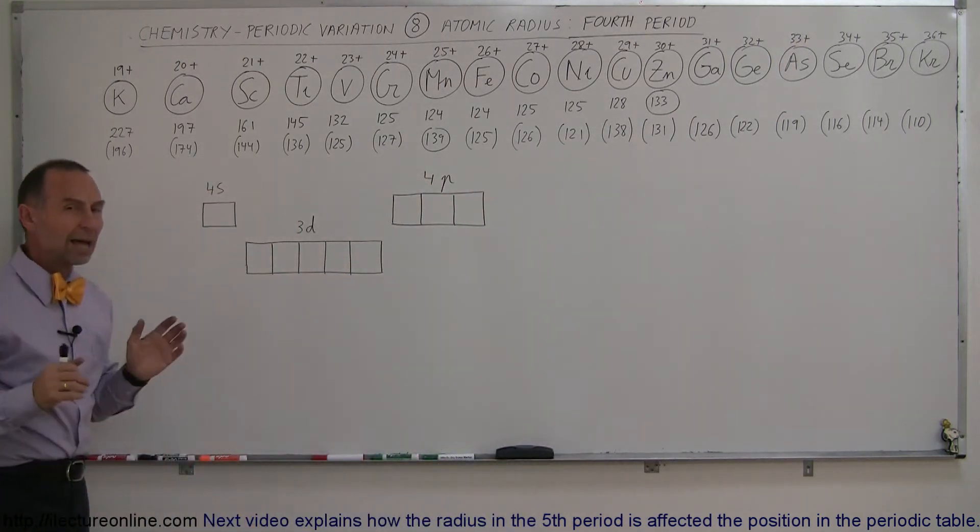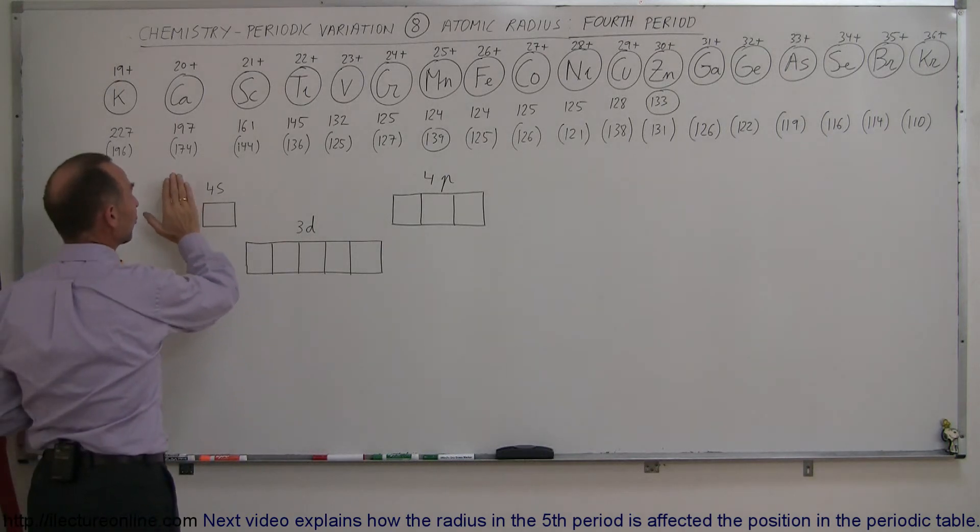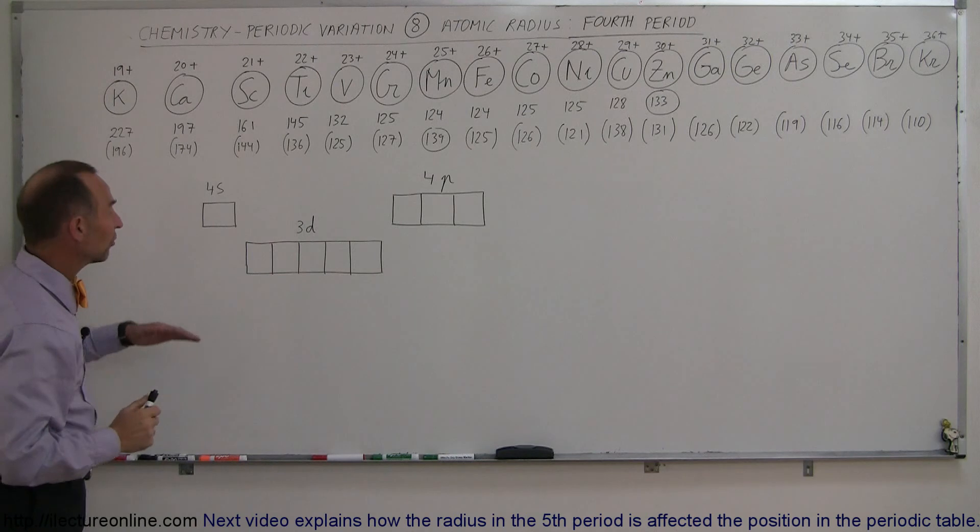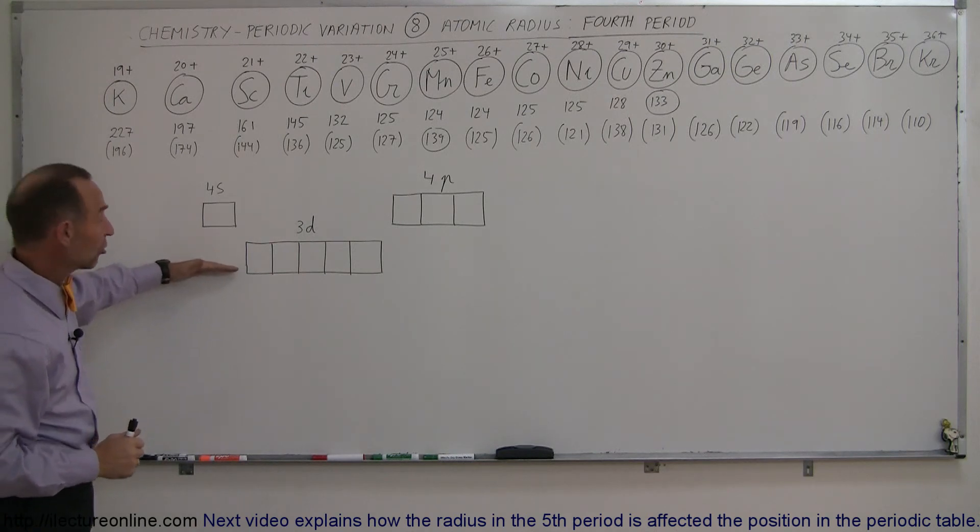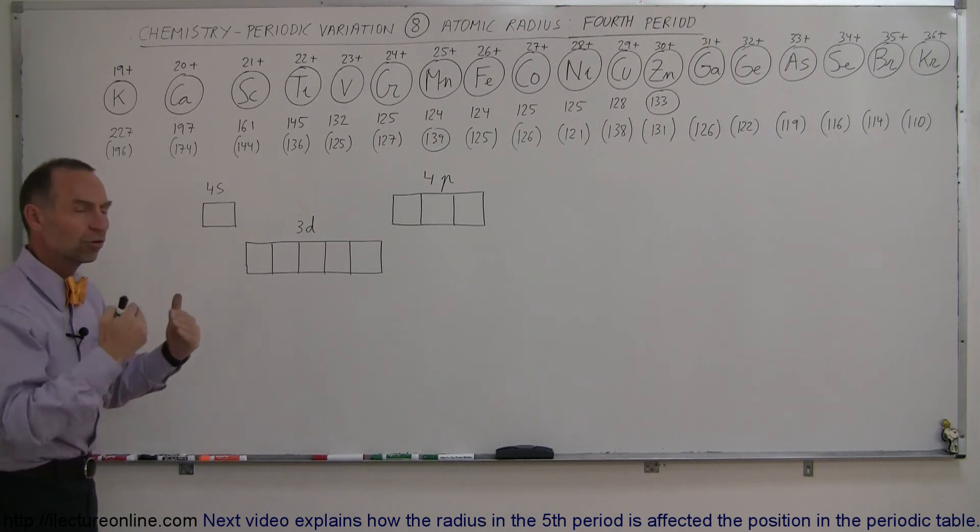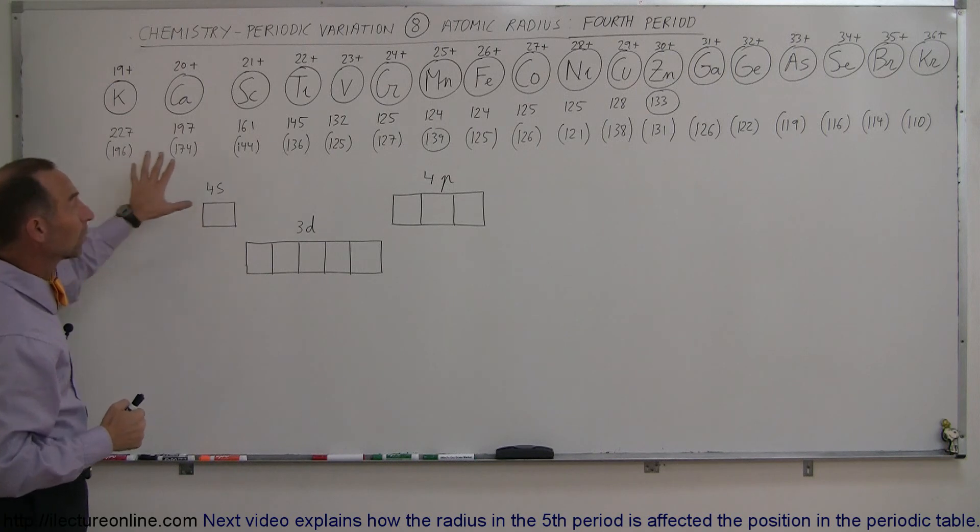So here we have a little bit more difficult task to understand how things are changing. What we're going to do is take a look at the outer electrons in the 4s, 3d, and 4p orbitals. Now notice that the 3d is on the third energy level, the 4s and 4p orbitals on the fourth energy level, so there's going to be some interaction and screening effect that is going to play a role in the radii and diameters of the atoms.